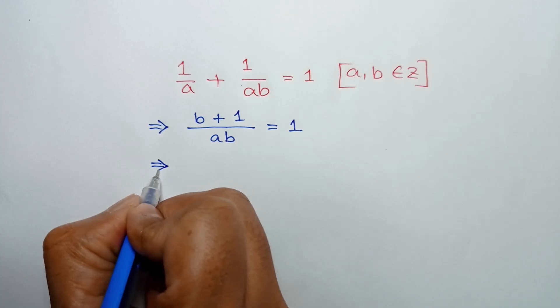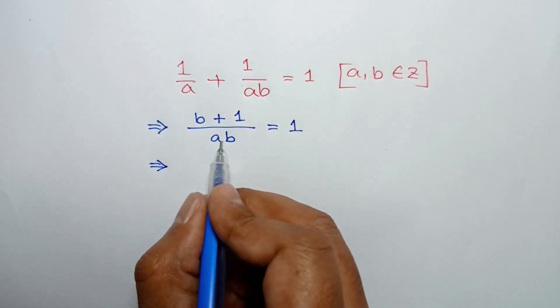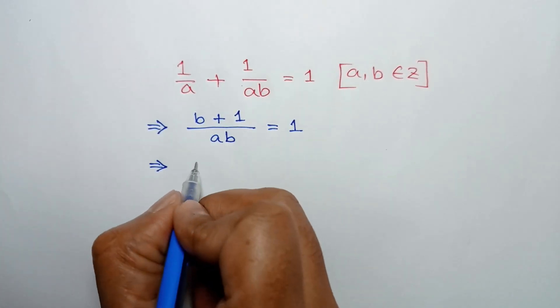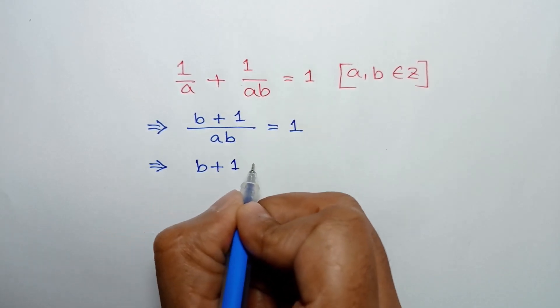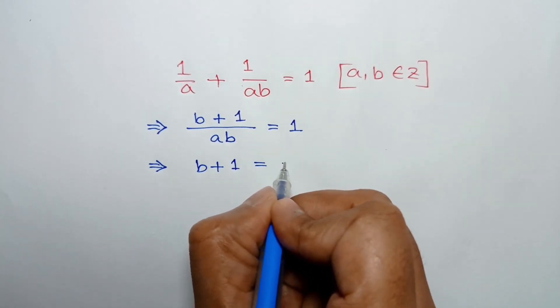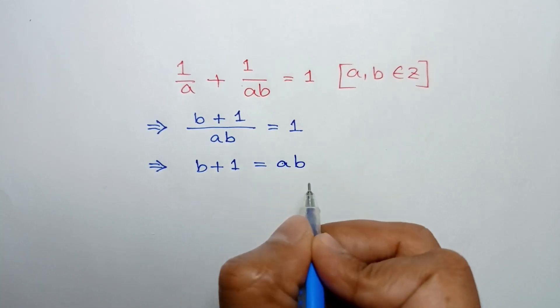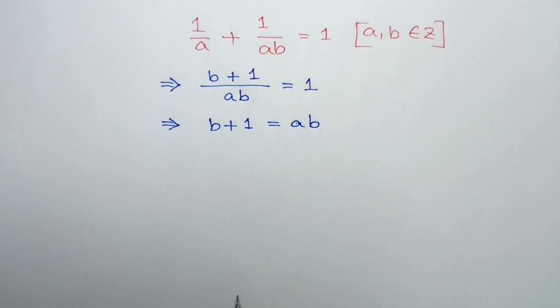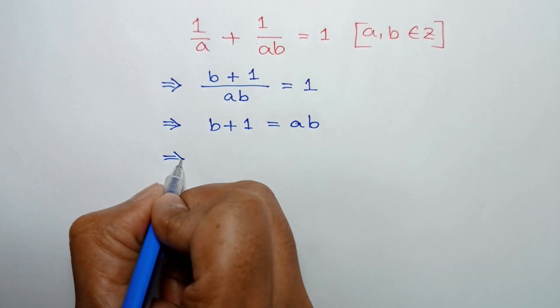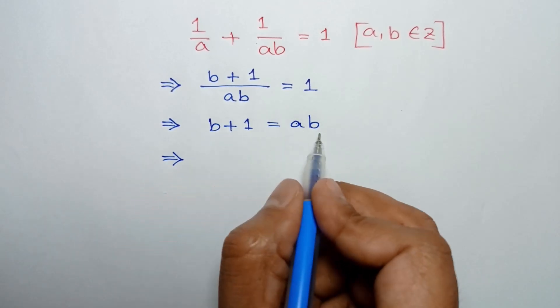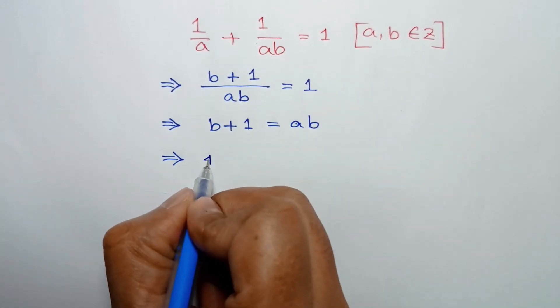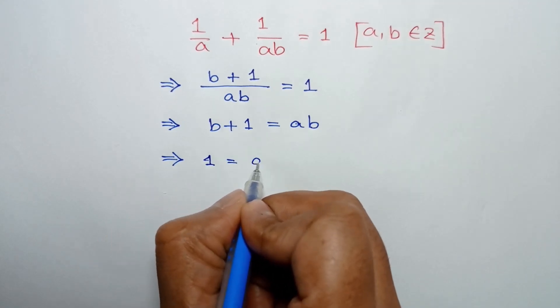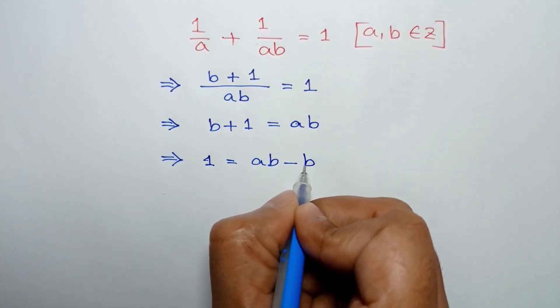Or multiplying both sides by ab, we can write b + 1 = 1 times ab, which is ab. Or taking this b to the right side, we can write 1 = ab - b.